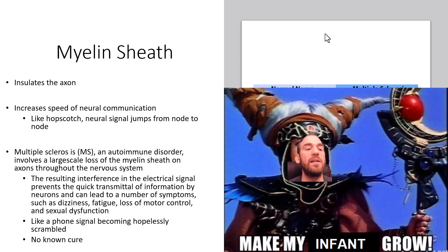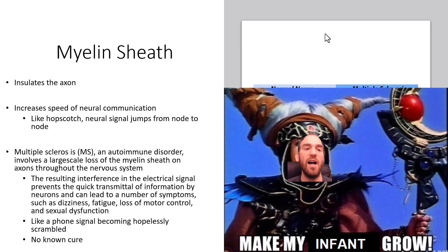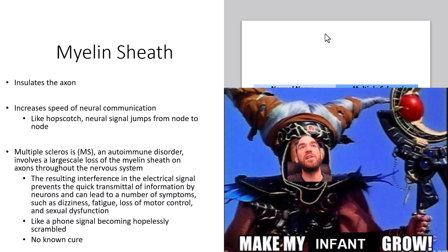In multiple sclerosis (MS), an autoimmune disorder, large-scale loss of myelin sheath occurs on axons throughout the nervous system. The resulting interference in the electrical system prevents quick transmission of information and can lead to dizziness, fatigue, loss of motor control, and sexual dysfunction — like a phone signal becoming hopelessly scrambled. There is no current cure. Damaged myelin means electrical signals can't cleanly jump between nodes, so neurons can't communicate efficiently.